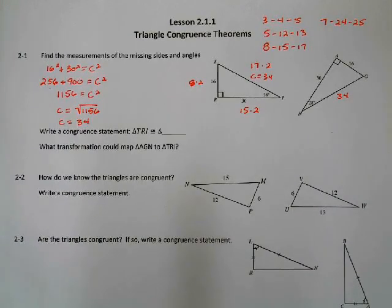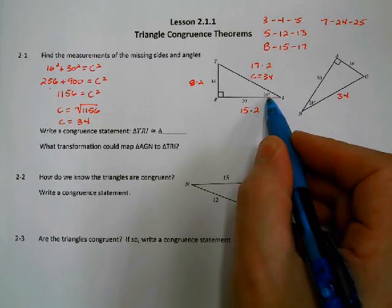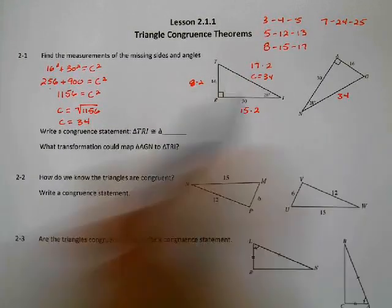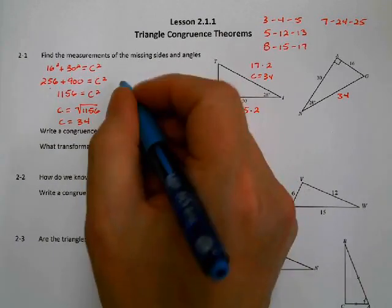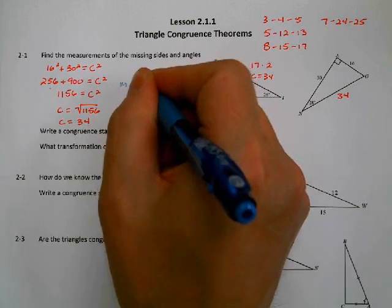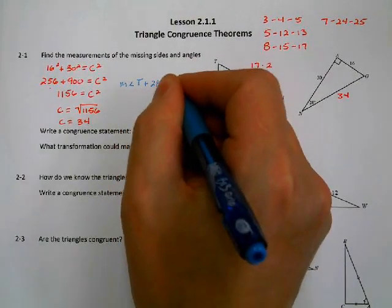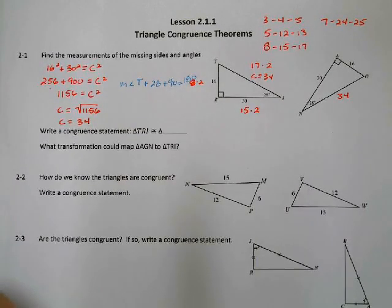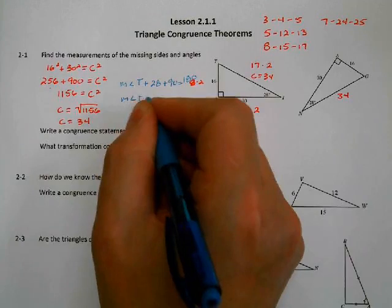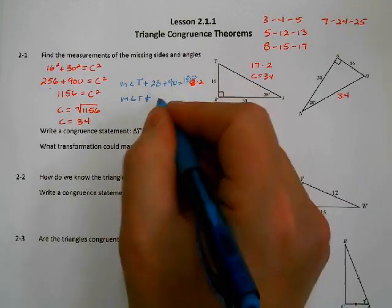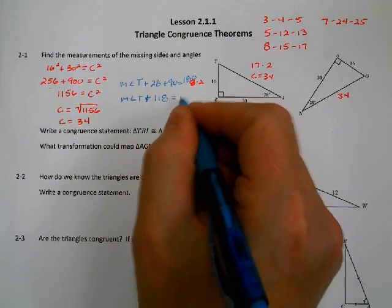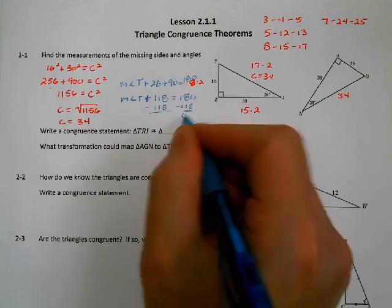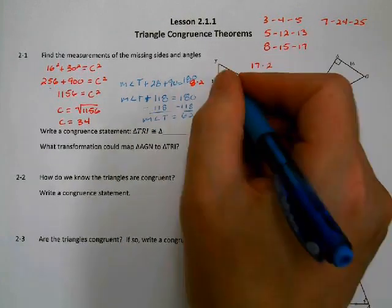Inside the triangle, we're missing an angle. We have a 90-degree angle and 28 degrees, but we're missing another one. From the last unit, we covered the triangle sum theorem, which states that all angles have to add up to 180 degrees. So the measurement of angle T plus 28 plus 90 equals 180. That gives us angle T plus 118 equals 180. Subtracting 118 from both sides, we get angle T equals 62 degrees.